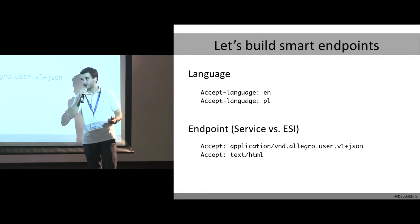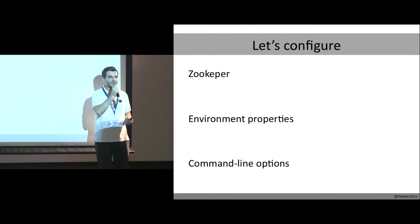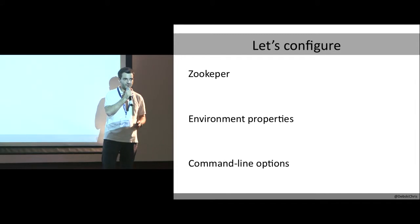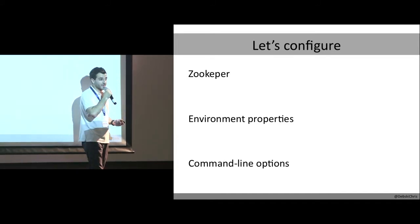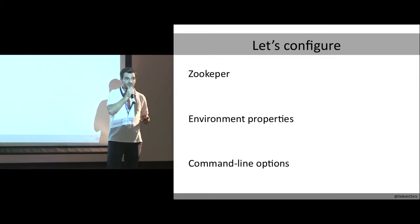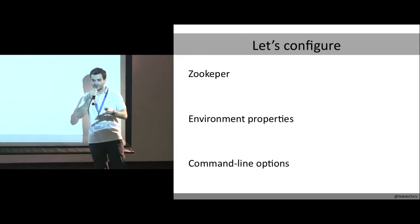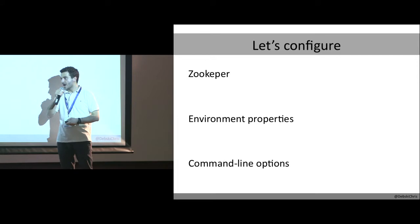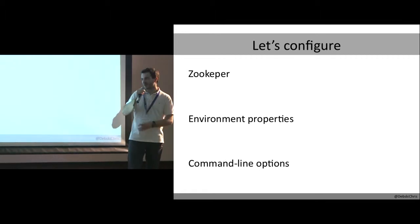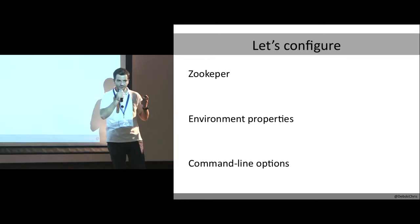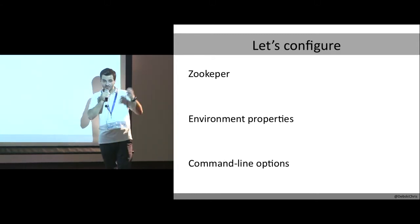We use three different ways to configure our services. First, we use centralized Zookeeper, which holds all configuration for all services. It's nice but not always sufficient, so we also give developers the ability to overwrite configuration in environment properties files — separate for development, test, and production. All properties can also be overwritten using command-line options, though that's not recommended. There's also a fourth way to override properties in the application, which we'll cover during the tests section.